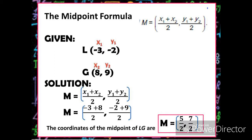Solution: we're going to substitute the values of X₁, Y₁, X₂, and Y₂ in the midpoint formula. Therefore, X₁ is negative 3 plus X₂ is 8, over 2; and Y₁ is negative 2 plus Y₂ is positive 9, over 2. So negative 3 plus 8 is 5, and negative 2 plus 9 is 7. Therefore, the coordinates of the midpoint of line segment LJ is (5/2, 7/2).